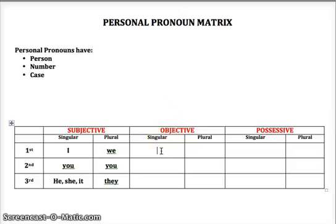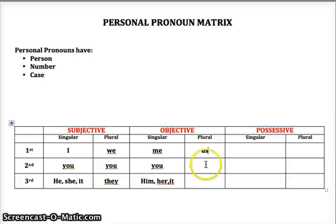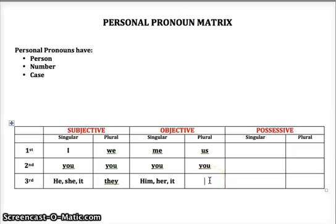Objective case pronouns: first person singular is me. Second person singular is — you're going to notice a pattern here — you. Third person singular objective case pronouns are him if it is a boy, her if it is a girl, or it. First person plural objective case is us. Second person plural is you. And third person plural objective case is them.